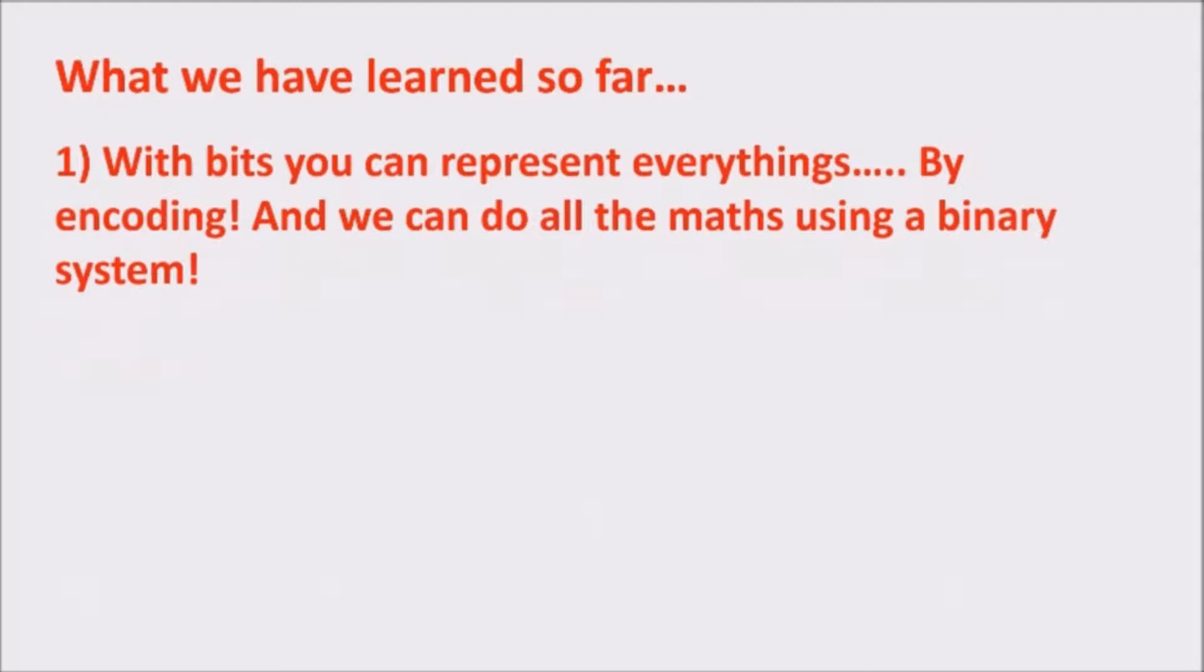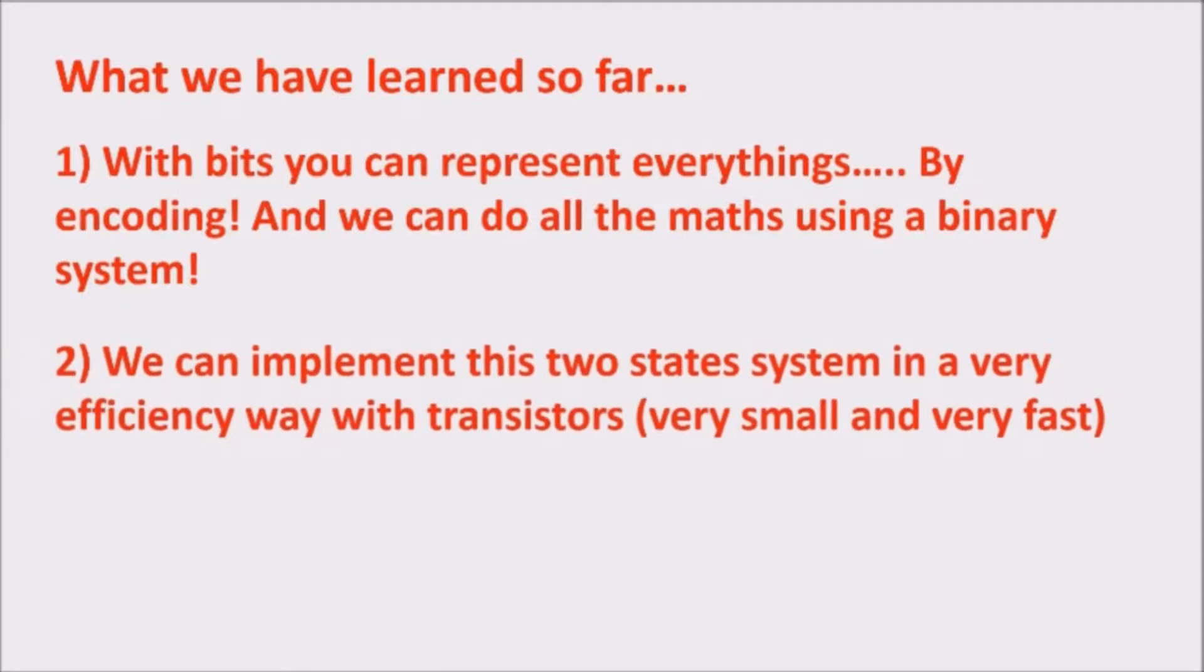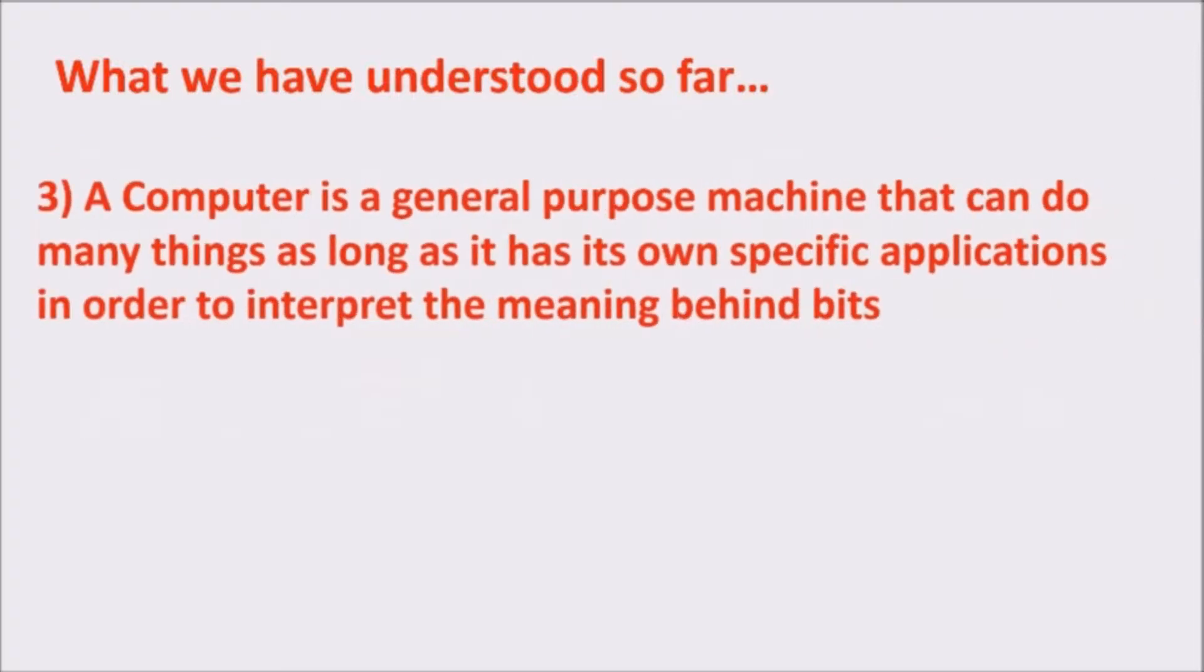What we have learned so far? First, with bits, you can represent everything by encoding. And we can do all the maths using a binary system. Second, we can implement this two state system in a very efficient way with transistors, very small and very fast. Third, a computer is a general purpose machine that can do many things as long as it has its own specific applications in order to interpret the meaning behind bits.